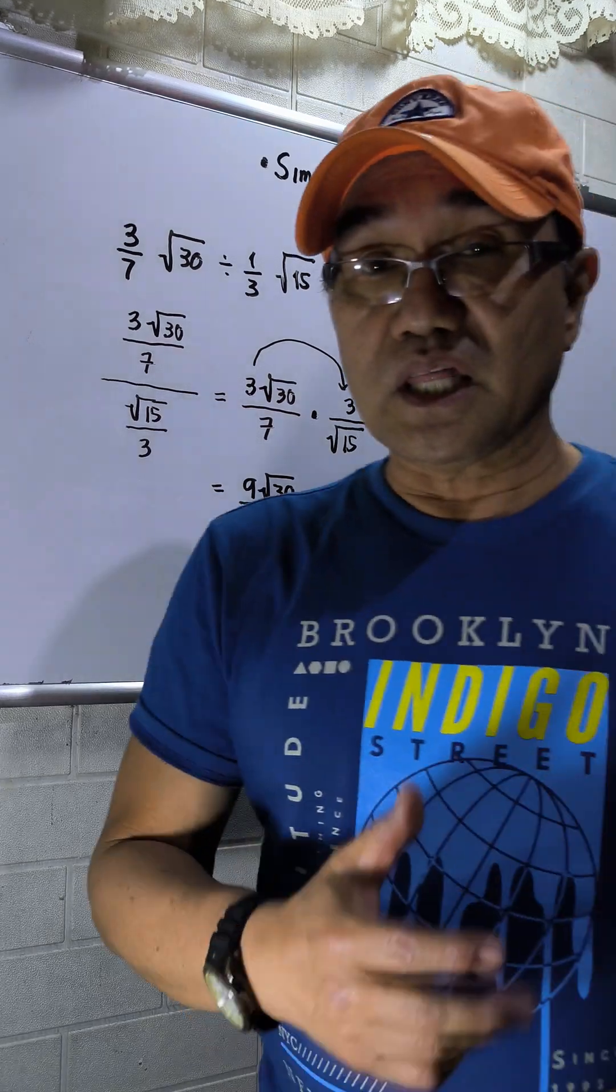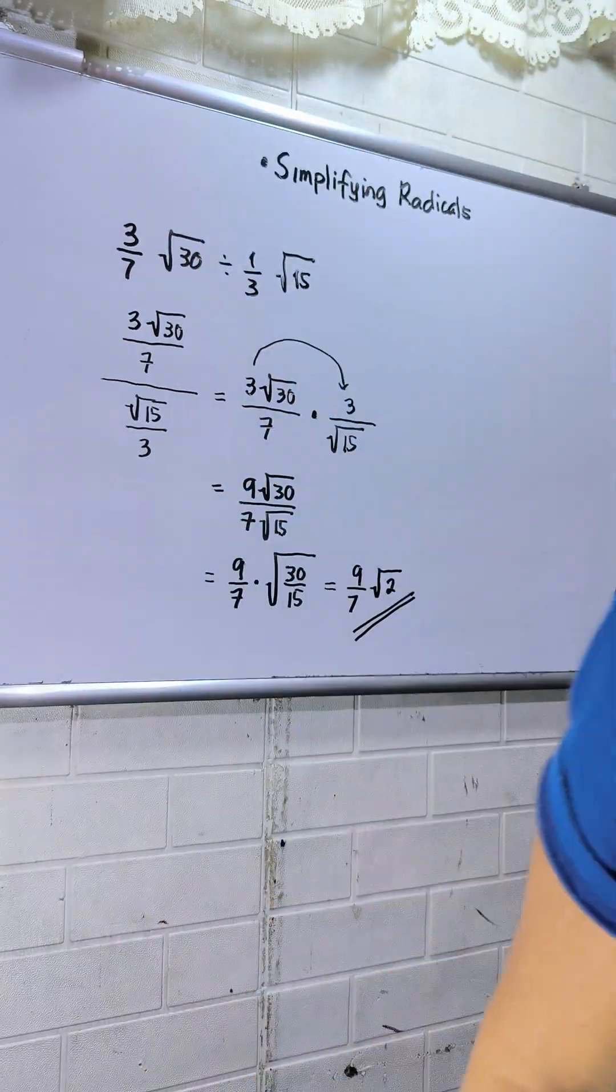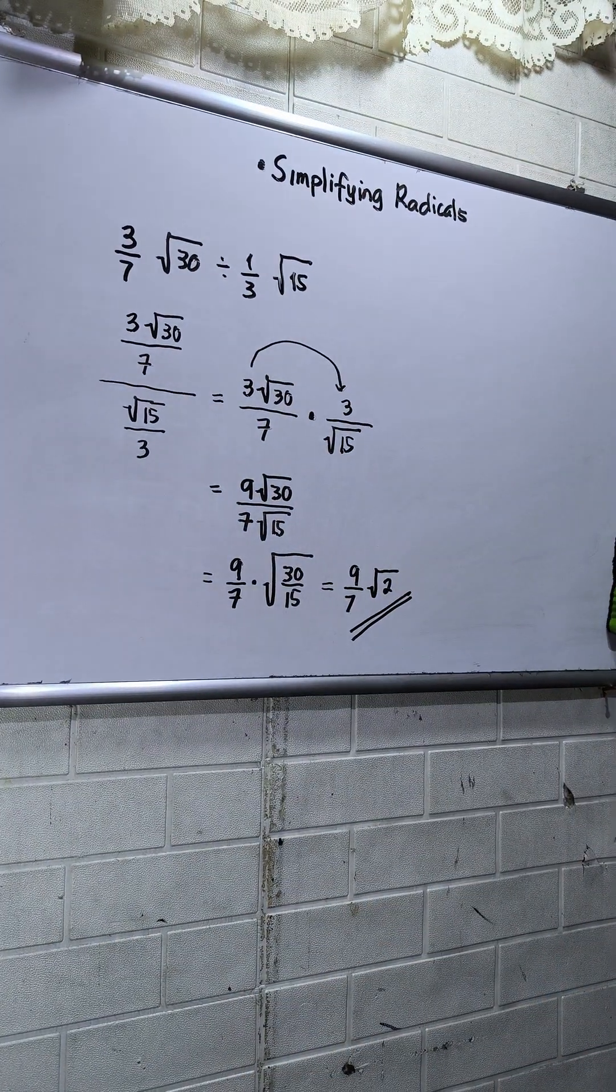So my final answer is 9 over 7 times square root of 2. That's all, thanks for watching.